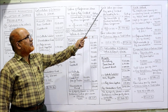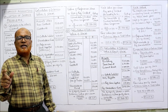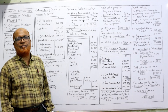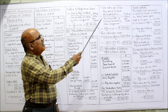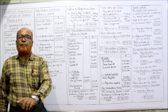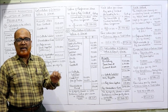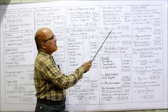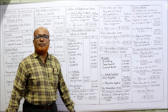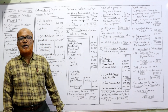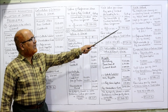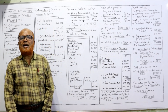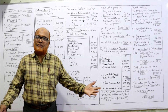Yield value = (rate of dividend paid by this company ÷ normal rate of dividend) × paid-up value per share. This company pays 20% dividend while other companies pay 15%; paid-up value is ₹100. So yield value = (20 ÷ 15) × 100 = ₹133.33. Fair value = (intrinsic value + yield value) ÷ 2 = (125 + 133.33) ÷ 2 = ₹129.17.